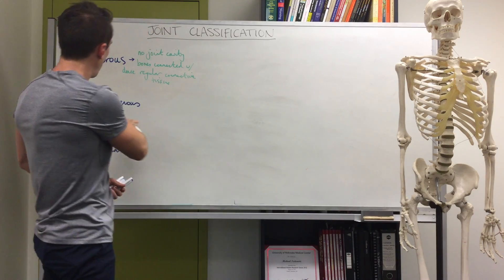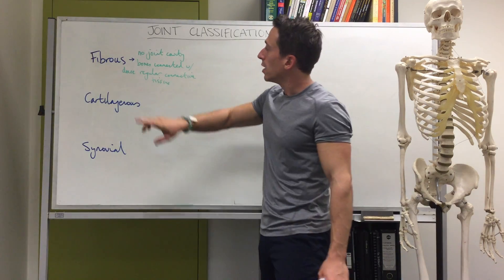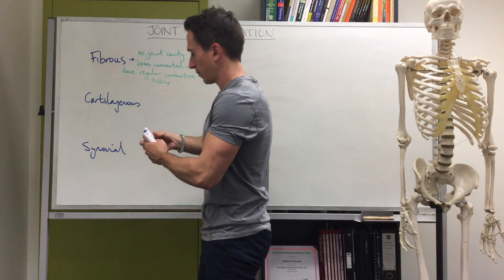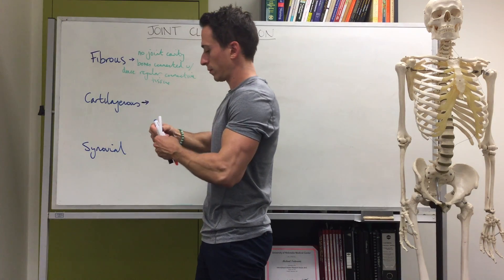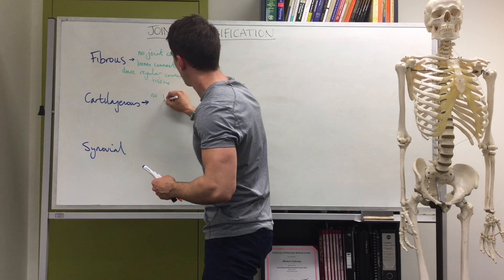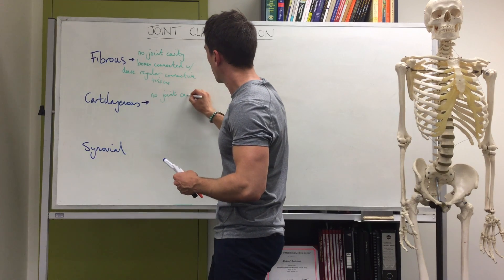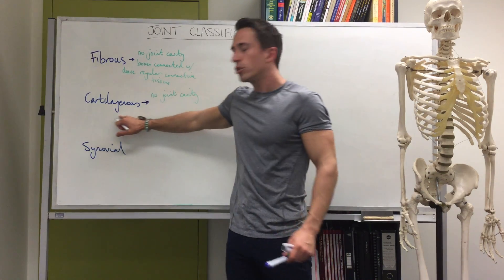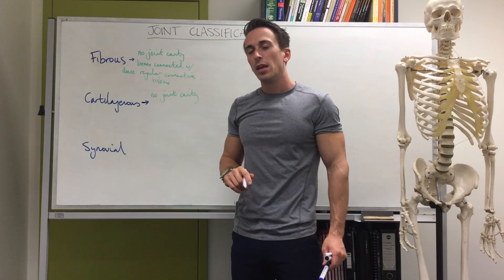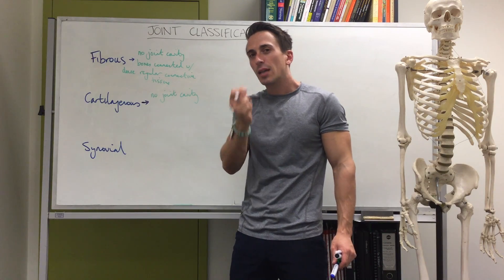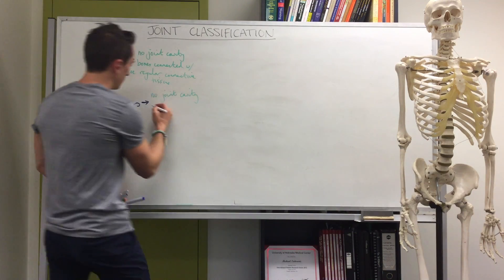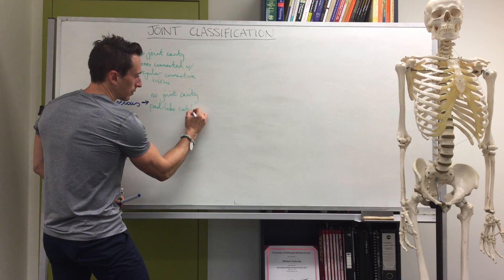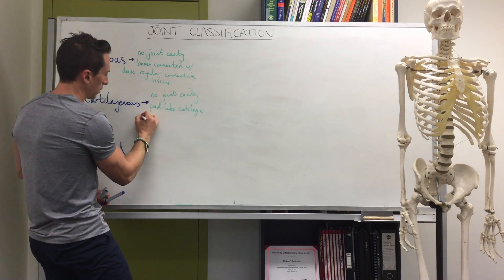Cartilaginous joints also have no joint cavity. In addition, it's cartilage that connects two bones together — specifically a pad-like cartilage connecting the bones.